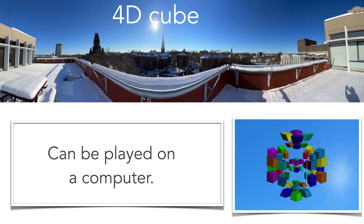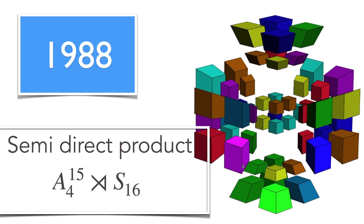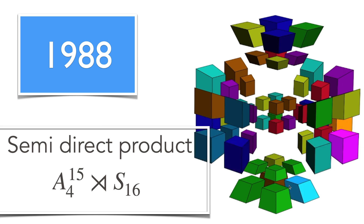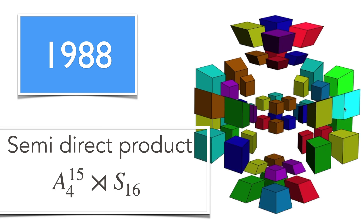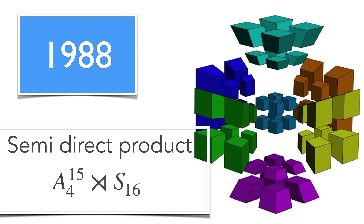The 4D cube is a cube which you have to play on the computer — here's the 2x2x2 case. I played it with a program available on the web. The group is very, very large: it's over the permutation group with 16 elements, because there are 16 corners, and then each cube has an alternating group A4, with one constraint, giving A4^15. This is also a wreath product.